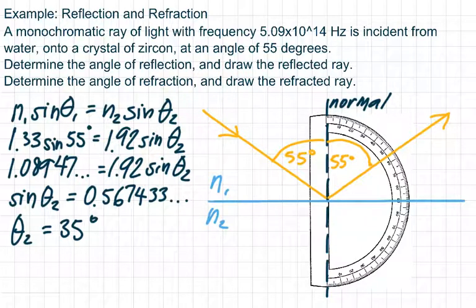Now be careful. Theta2 is not 0.567. Sine of theta2 is 0.567. So you want to do the inverse sine of that number in degree mode. Then you get 35 degrees for theta2. And so I measure 35 degrees from the normal, and I can see there's my refracted ray as it goes into the zircon.